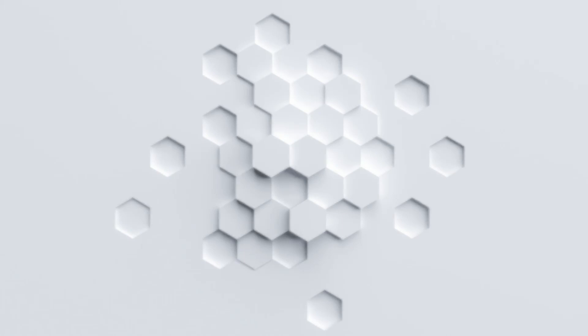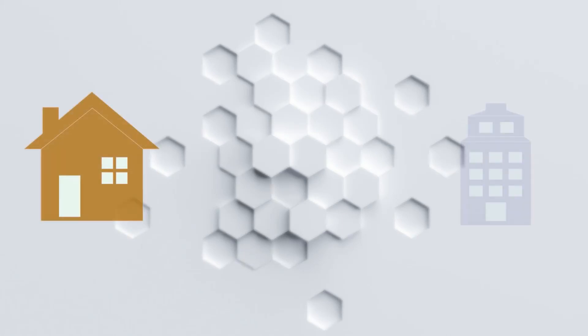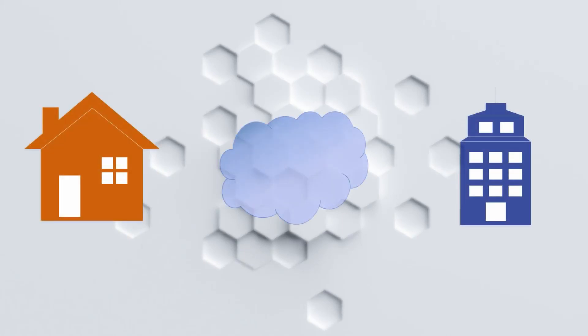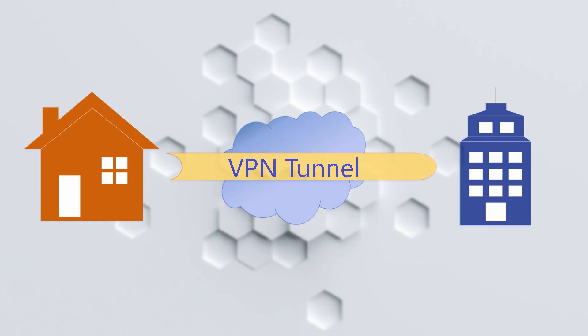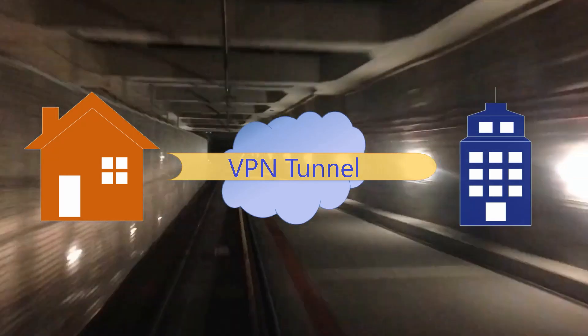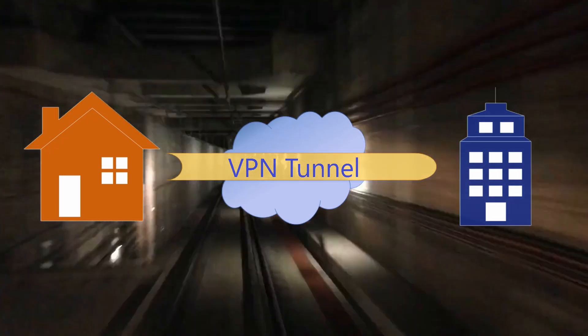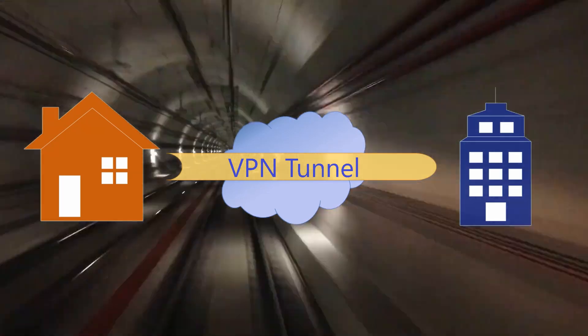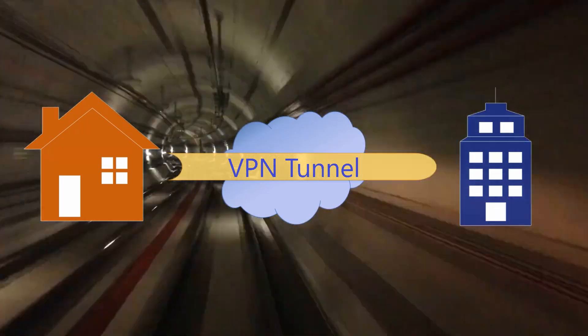You've probably used VPNs before. Maybe you have VPN software installed on a computer at home, and you use it to connect to your office. What we're doing with this is building a tunnel through a network. This is like a bypass tunnel under a city — we get through the city but we're not bothered by any of the traffic lights.